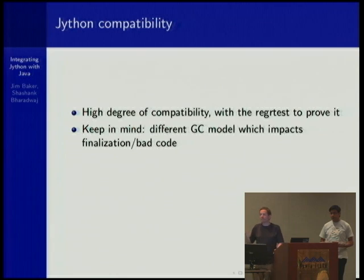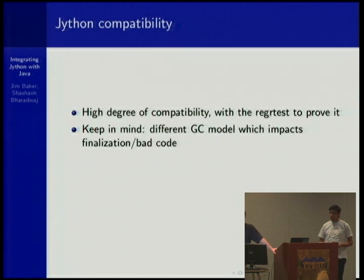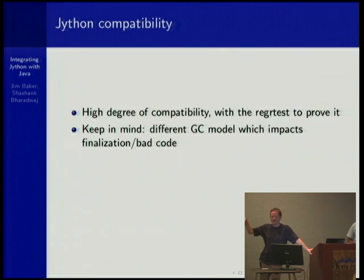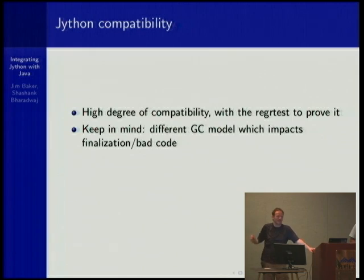I don't know if this has ever bitten anyone, but this is a great time to ask: have you ever written code that depends on the finalization semantics of the garbage collector in Python? That is, you're depending on a reference going out of scope to ensure that it is closed. I believe PyPy has the same exact issue. Have you written that code? Some people say yes.